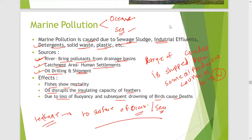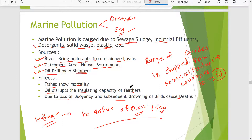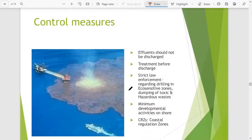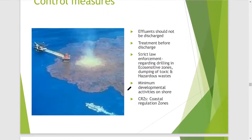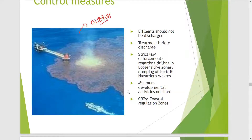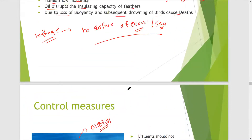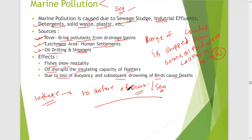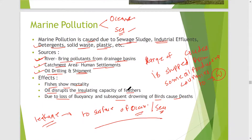As you know, oil has lower density than water, so it spreads over the surface of water. It looks like the picture shown — you can see there is a layer of oil over the surface of water. These types of accidents are called oil spills. So oil spills are also a cause of marine pollution.